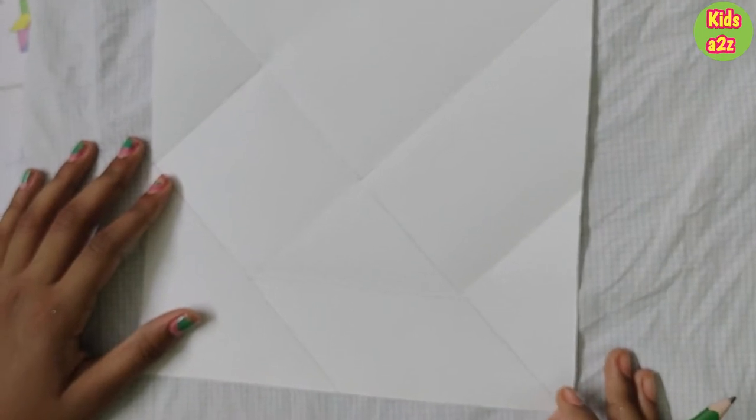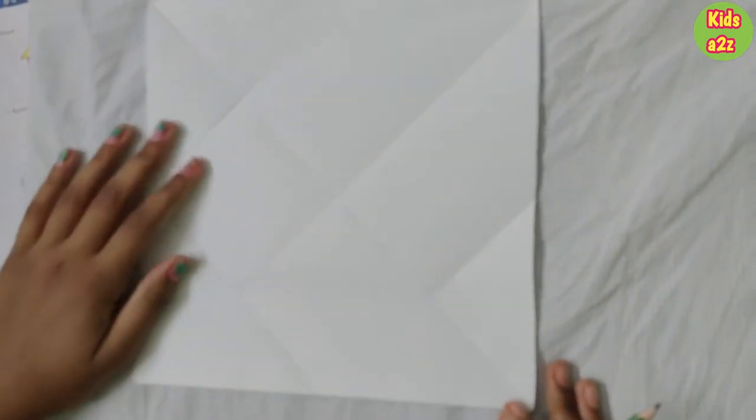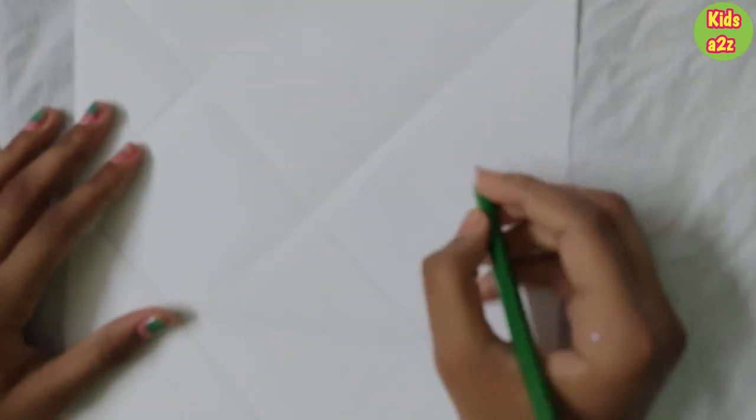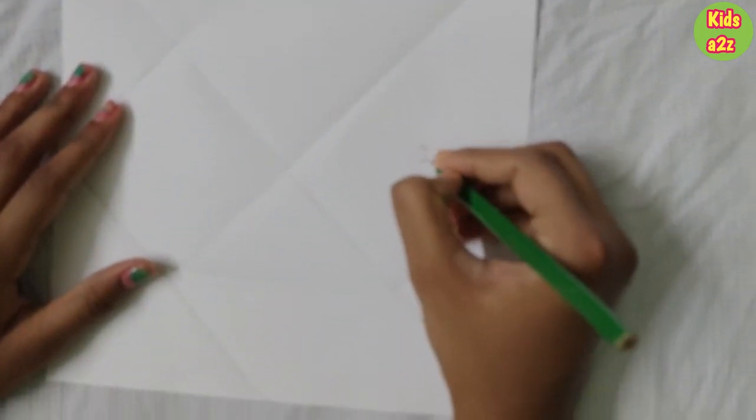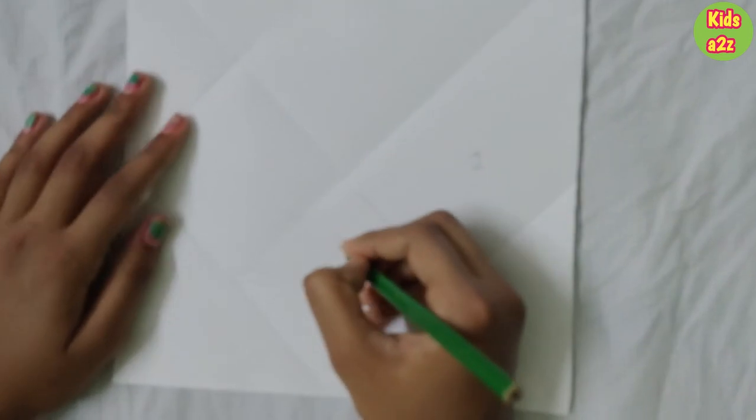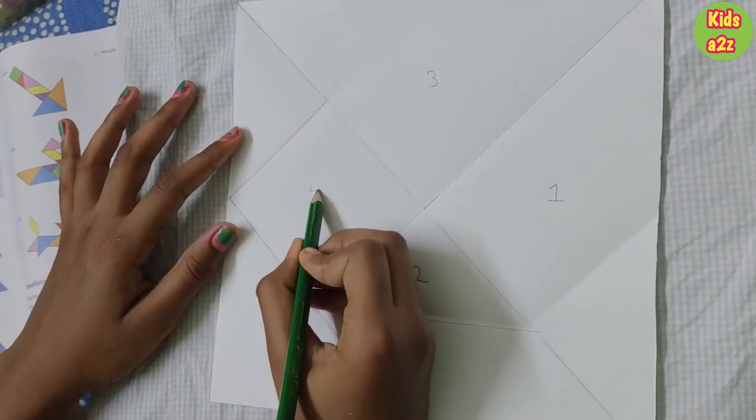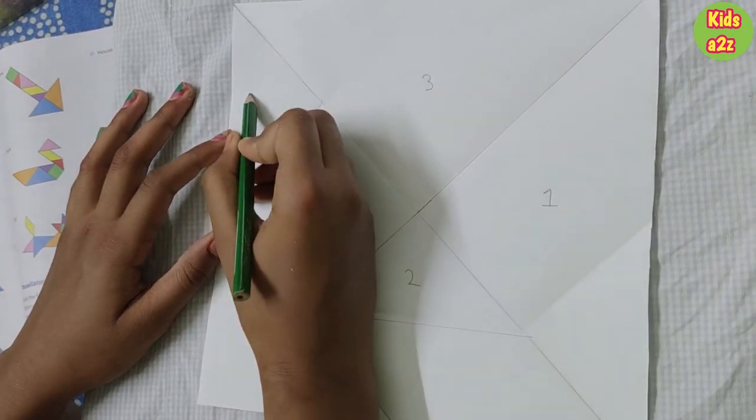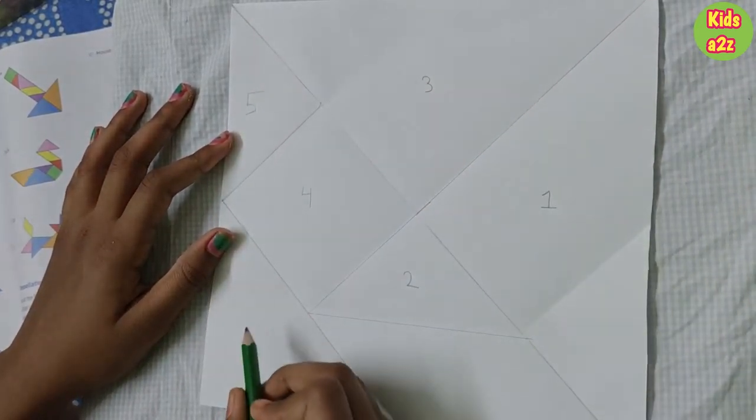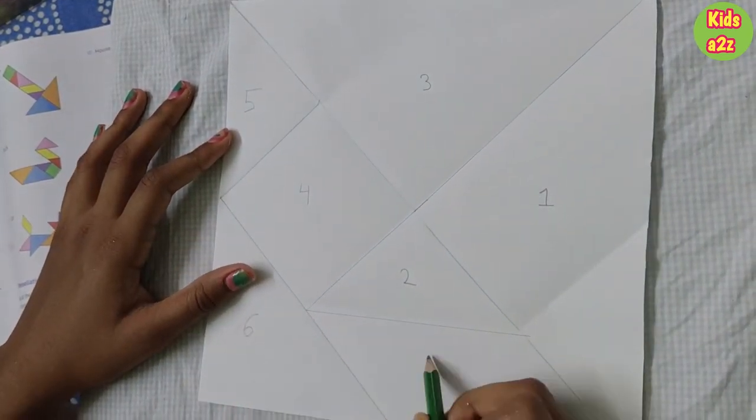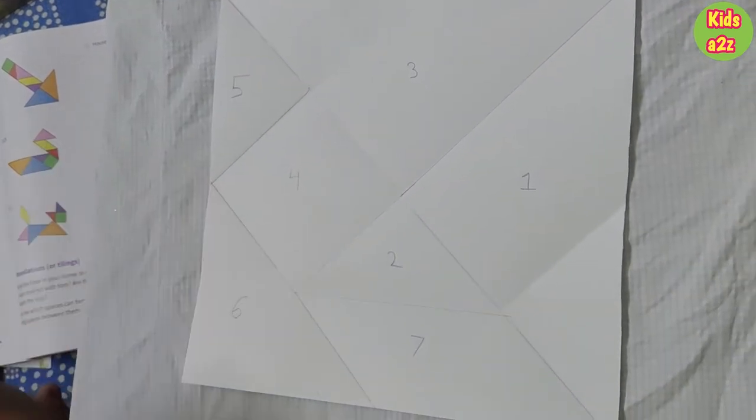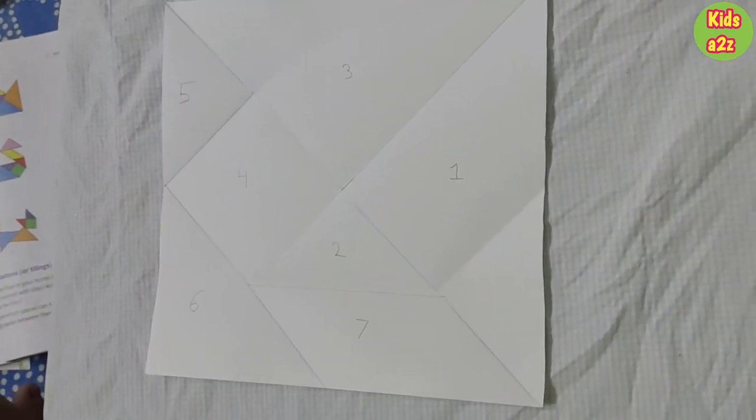Now this is our diagram and let's recount and write down how many pieces we have. So this is one, this is two, this is three, this is four, five, six and seven. So our diagram has seven pieces.